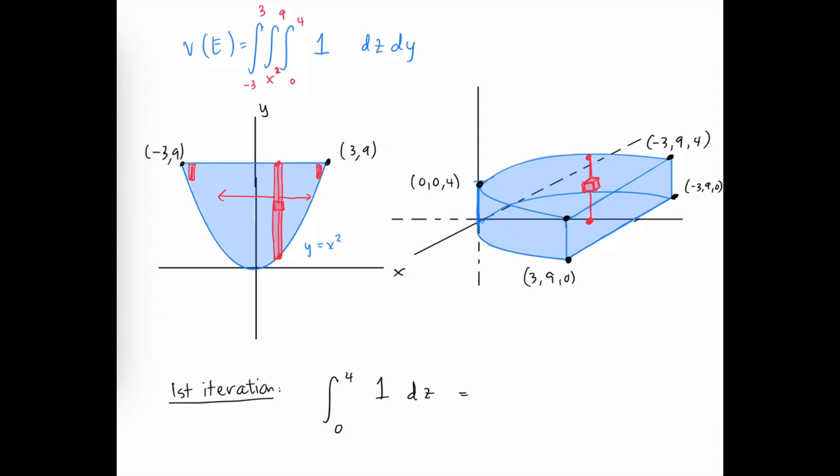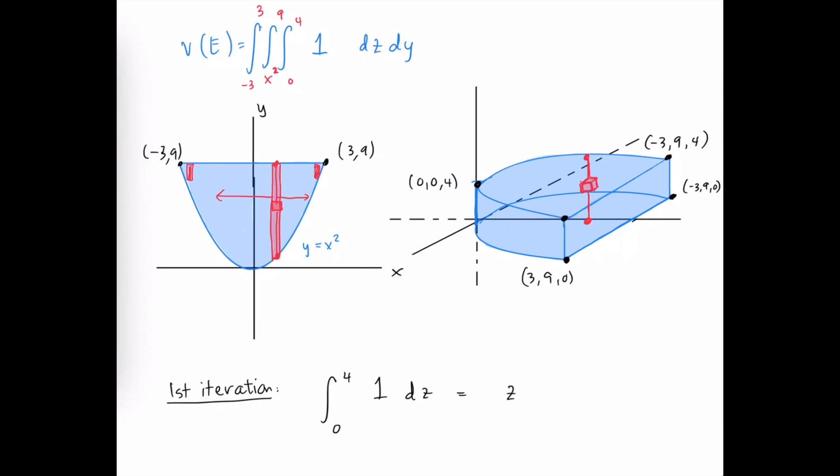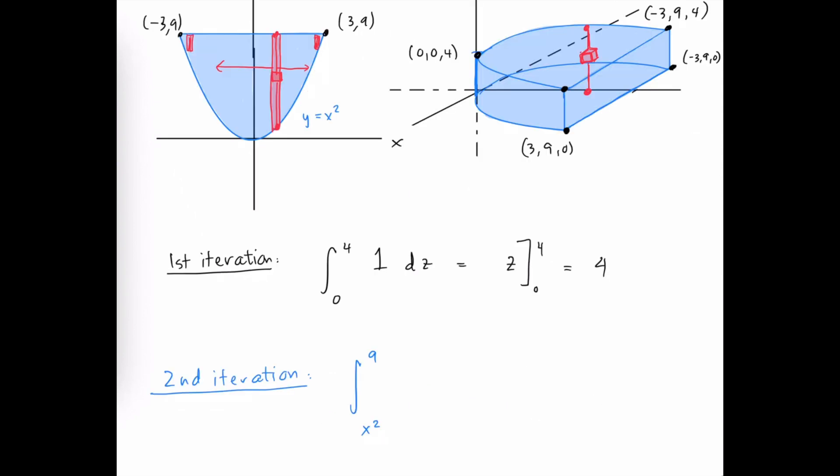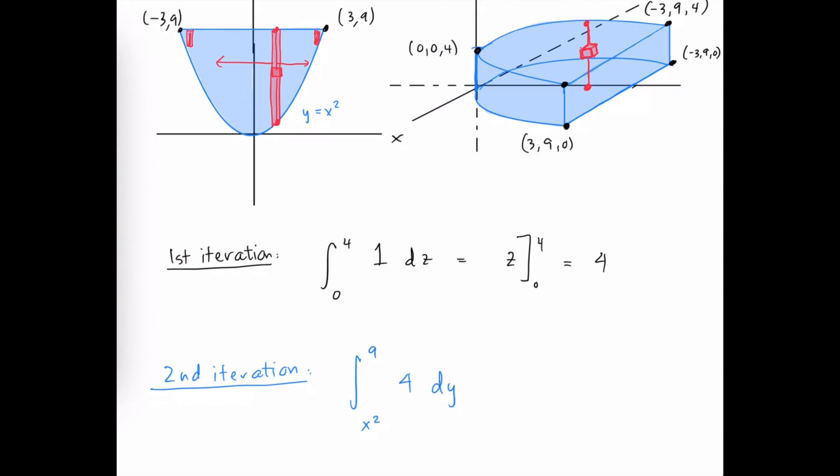So the first iteration is the integral from 0 to 4 of 1 dz. The integral of 1 is z evaluated from 0 to 4 is going to give me just 4. So that becomes the integrand of our second iteration evaluated with respect to y with the limits of integration from x squared to 9.